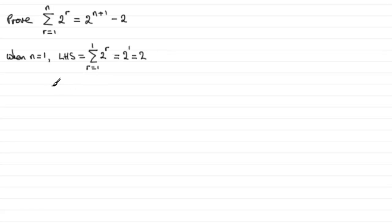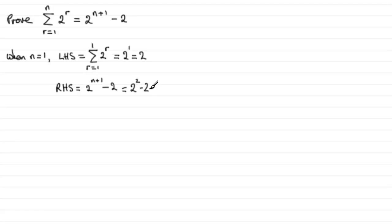Now we check out the right hand side. We can see it is 2 to the power n plus 1 minus 2. And when n equals 1, we're going to have 2 to the power 2 minus 2, in other words 4 minus 2, which is equal to 2.